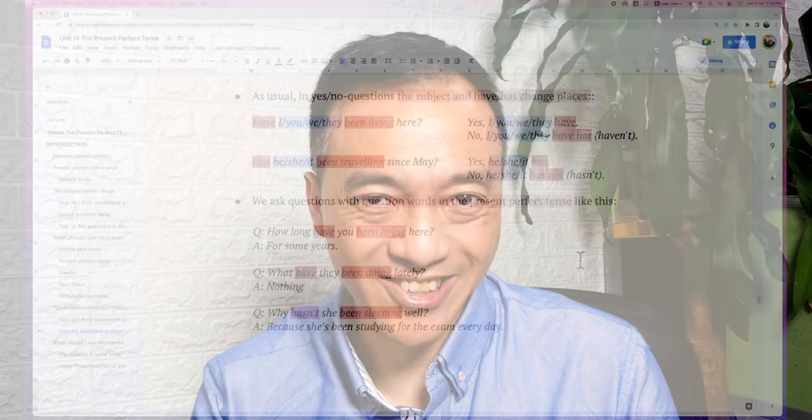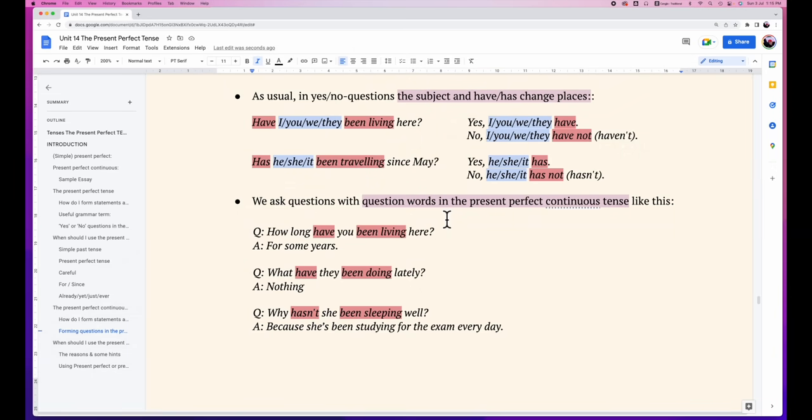How about other question words? Let's take a look. We ask questions with question words in present perfect continuous tense like this: How long have you been living? For years or for some years. What have they been doing lately? Nothing. Why hasn't she been sleeping well? Because she's been studying for exam every day.